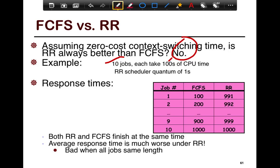This is the case when jobs have the same length. For example, if you look at FCFS, it would finish the first job in 100 seconds, the next one at 200 seconds, so on and so forth, until it finishes the 10th job at time 1000.